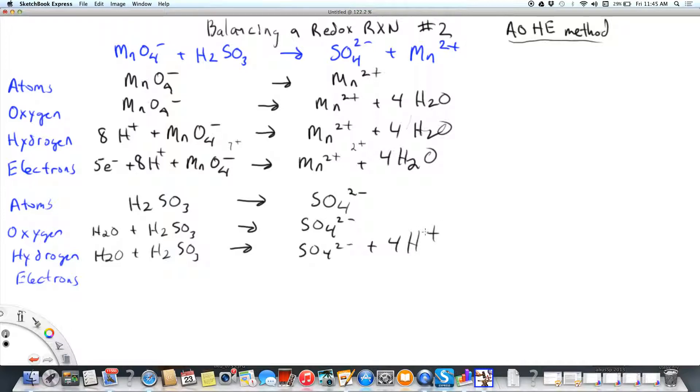Now all my atoms and elements are balanced and it's time to do electrons. You can see the left is neutral and the right, I've got two minuses and four pluses. So I'm going to have to add two electrons. I need to make the right side more negative. We can't add positive, but we can add negatives.